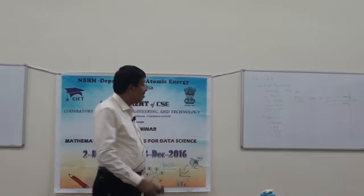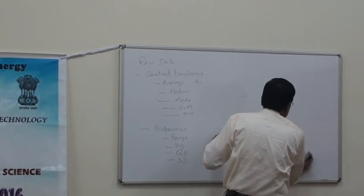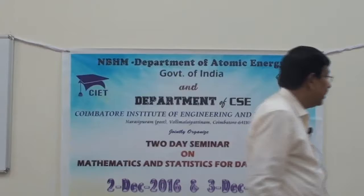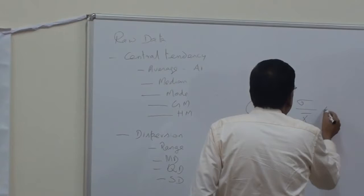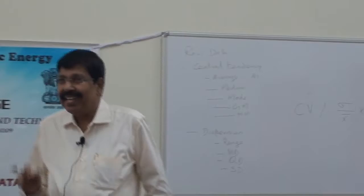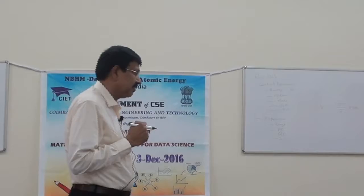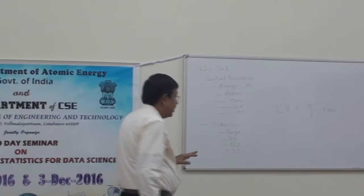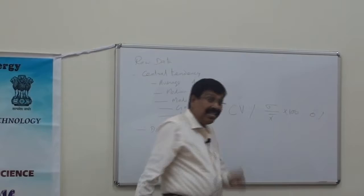That is why there is another very strong measure: the Coefficient of Variation (CV). The simple formula is standard deviation divided by mean, multiplied by 100. The interpretation is: less the coefficient of variation, more will be the consistency. Suppose if there is no deviation at all — all students score 40, 40, 40, and 40 — there is no deviation, and the CV will be 0. So less the CV, more is the consistency.